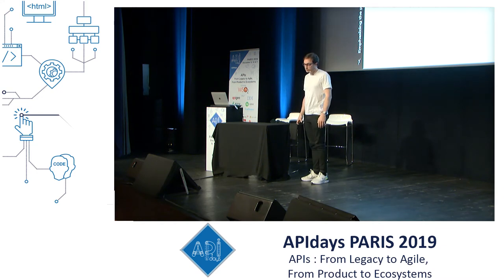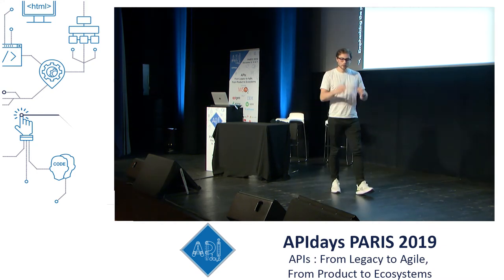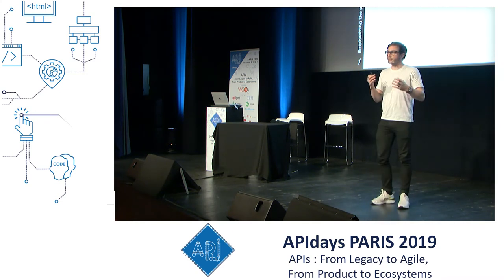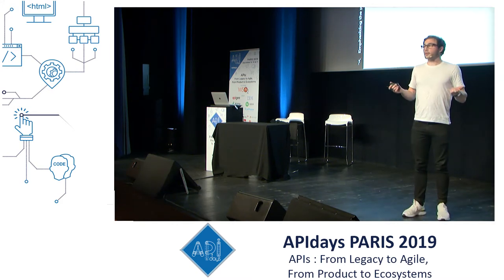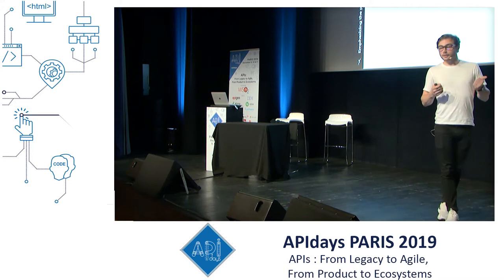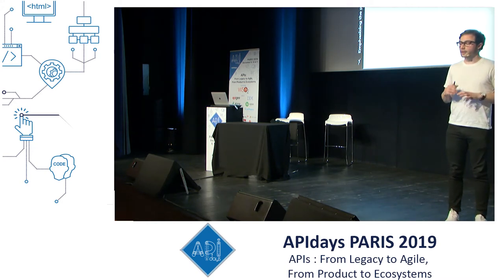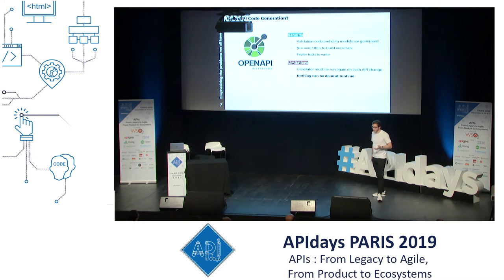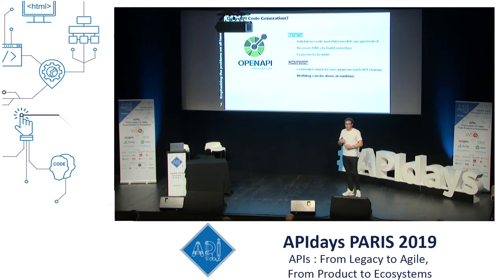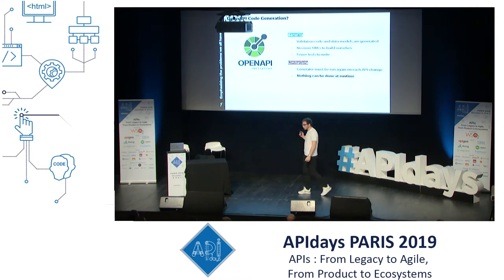The most difficult change is altering the set or order of operations to execute to realize a business process, like ordering a product. If we don't want to rewrite all the code every time, we can generate code with OpenAPI. Basically, if I do that, I won't have to write the validation code and data models anymore, and I won't have to build the URLs by myself on the client side. I should have fewer tests because all this is generated. Still, each time I change the API version I have to rerun the generator, so nothing can be done at runtime — and that's something I propose to address.